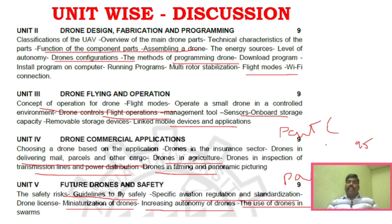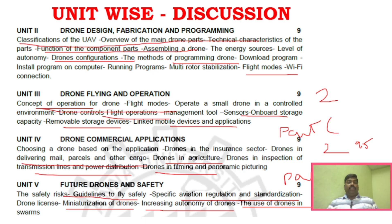For Unit 4 two-mark concepts and Unit 3 — Operate a Small Drone in a Controlled Environment, Concept of Operation in Drones, Removal Storage. For Unit 1 two-marks: Classification of UAV, Technical Characteristics, Parts and Energy Sources.